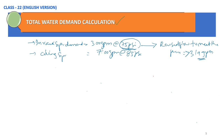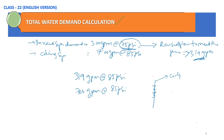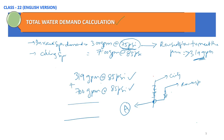We now have the revised in-rack sprinkler demand as 319 GPM at 85 PSI, and the ceiling sprinkler demand as 700 GPM at 85 PSI. Since both are now at the same pressure at connection point A, we can add them: 319 plus 700 gives approximately 1019 GPM. This is the total water demand for this particular warehouse.